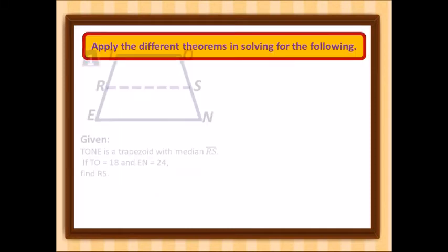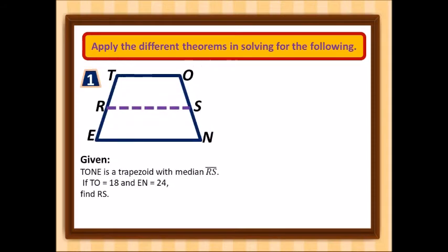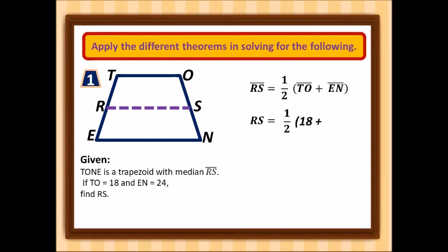Now let's apply the theorems. TONE is a trapezoid with median RS. If TO = 18 and EN = 24, find the value of RS. Using the median theorem: RS = (1/2)(TO + EN). Substituting: RS = (1/2)(18 + 24) = (1/2)(42) = 21. Therefore RS = 21.